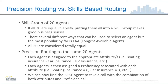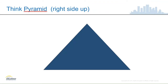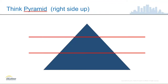I have a couple of examples here. I call them the think pyramid as to how we can make this the selection process. In the first example, the pyramid is right side up and we're going to show three different layers of that pyramid. In precision routing, you can have a maximum of 10 layers, but the same principle applies whatever the number of layers you're using.